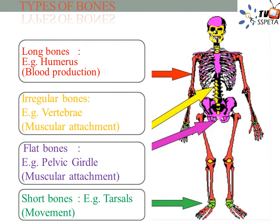Types of Bones. Long Bones — the long bones are longer than they are wide. They consist of a long shaft with two bulky ends or extremities. They are primarily compact bone but may have a large amount of spongy bone at the ends. Long bones include bones of the thigh, leg, arm and forearm.